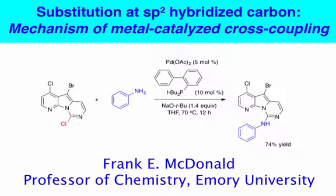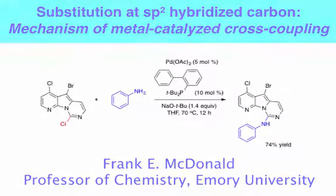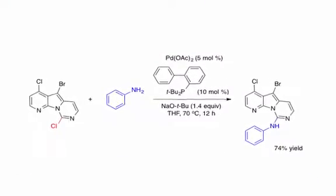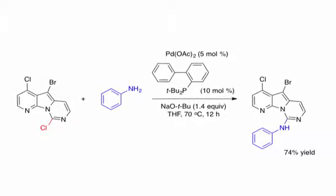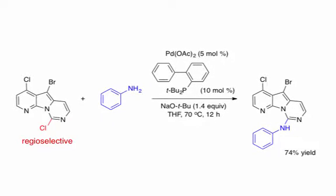This video describes the mechanism for transition metal catalyzed substitution of an sp2 hybridized heteroaryl halide with an amine nucleophile. This particular example is regioselective with substitution occurring at only one of three halides.